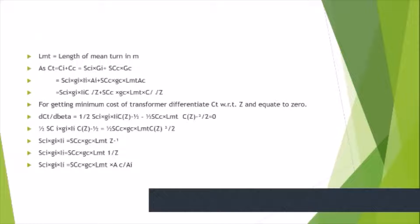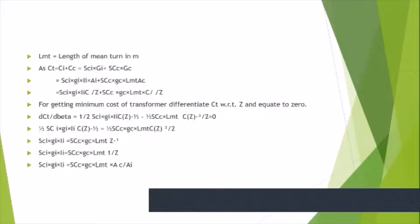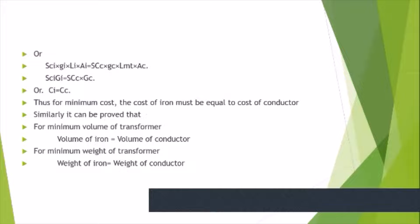Here is the expression for minimum cost designing. For getting minimum cost of transformer, differentiate CT with respect to Z and equate to zero, where CT is the total cost of transformer for active material. Thus for minimum cost, the cost of iron must be equal to the cost of conductor.